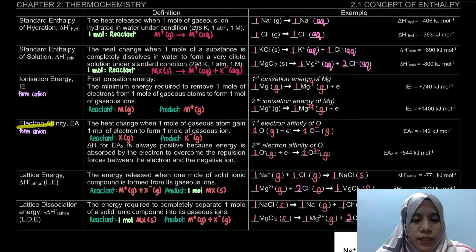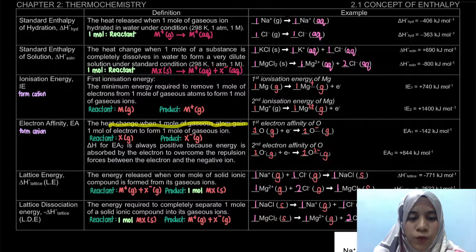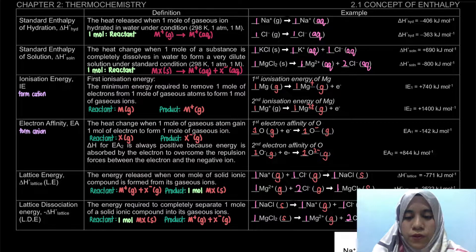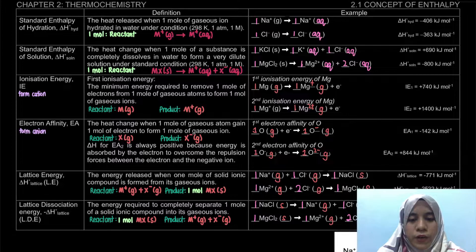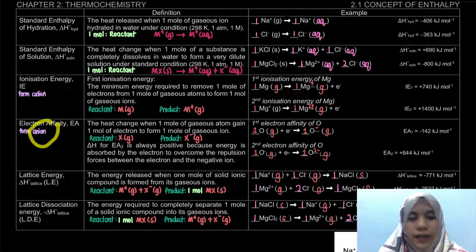So what is electron affinity? It is the heat change when one mole of gaseous atoms gain one mole of electrons to form one mole of gaseous ions. In this equation, all of the species must be one mole each. When an atom gains an electron, it forms a negatively charged ion, also called an anion.